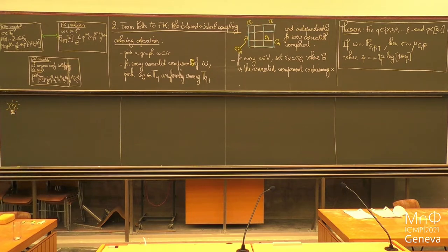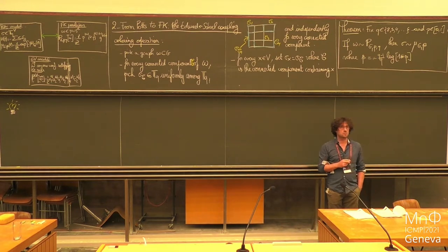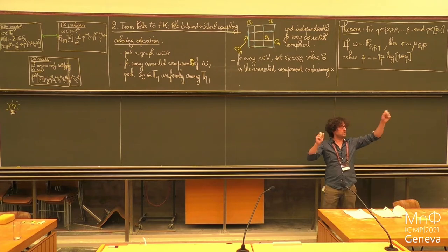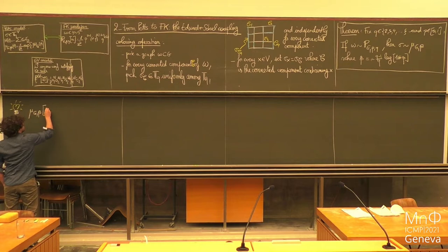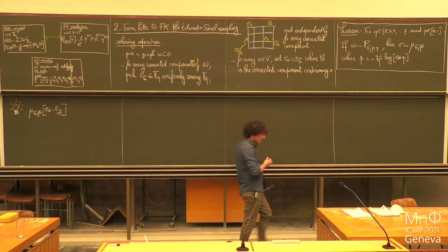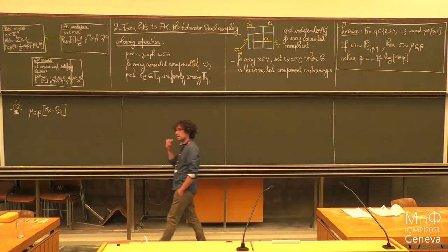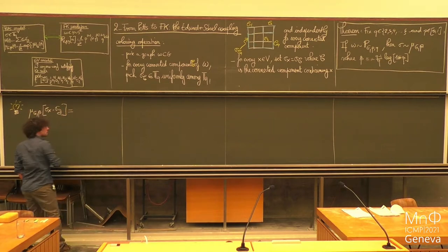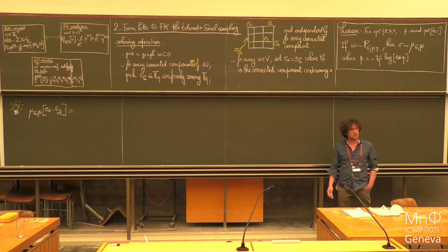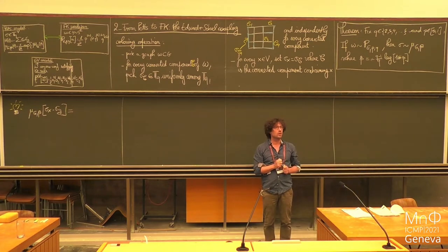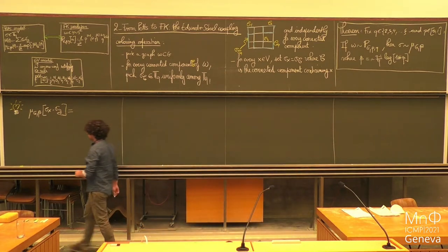When you create a link between two models, you want a nice dictionary between the properties of one model and the properties of the other one. If you look at the Potts model, typically the type of quantity you would be interested in are the spin-spin correlations — you want to know how much the spins of two vertices have a tendency to align. Typically you would look at: what is the correlation between the spin at x and the spin at y?